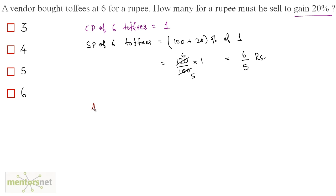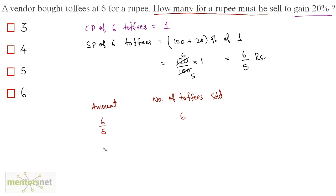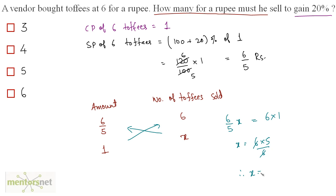So for 6/5 rupees, the number of toffees sold is 6. We need to find how many toffees to sell for 1 rupee, so we cross multiply: (6/5) times x equals 6 times 1, so x equals 6 times 5/6, which equals 5. We can sell 5 toffees for 1 rupee. Option C is the correct answer.